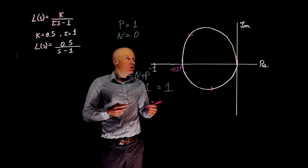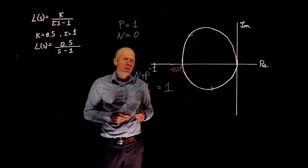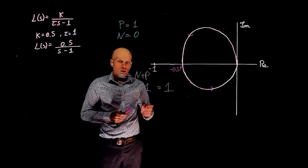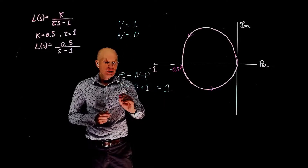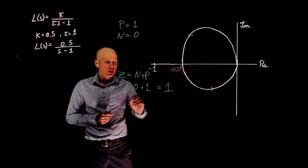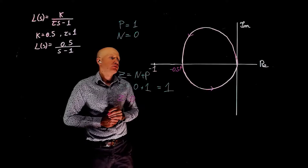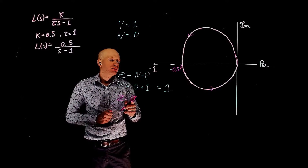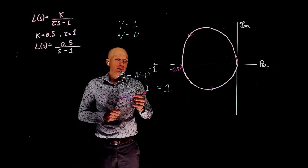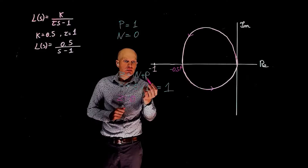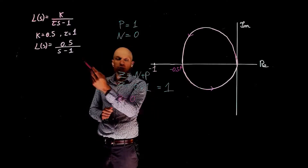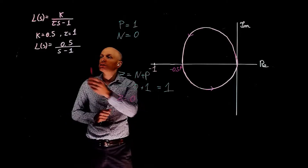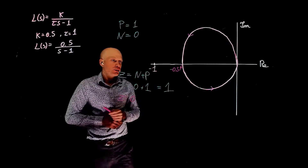If you want to make the system stable, what should we do? For a system to be stable, Z needs to equal 0. How do we make Z equal 0? We need N to be negative 1 in this case, because P is 1. If N is negative 1, then Z equals 0, and there are no unstable poles in the closed-loop system.